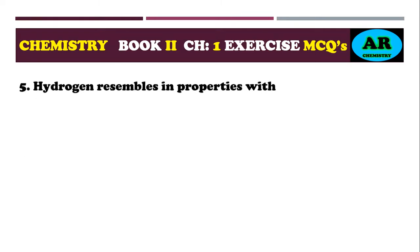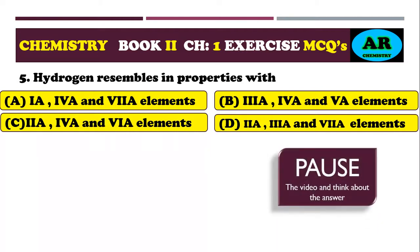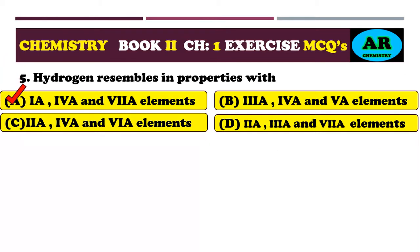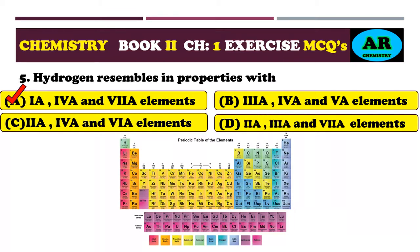Fifth MCQ: hydrogen resembles in properties with which groups? Option alpha: 1A, 4A, and 7A elements. Option beta: 3A, 4A, and 5A. Option charlie: 2A, 4A, and 6A. Option delta: 2A, 3A, and 7A. The correct option is alpha — hydrogen resembles metals in group 1A, the carbon family in group 4A, and halogens in group 7A.